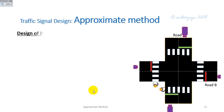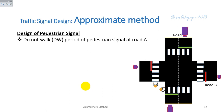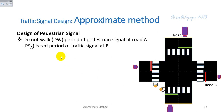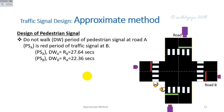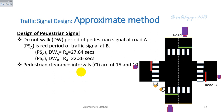For the design of the pedestrian signal: the 'Do Not Walk' period for Road A is equal to the red timing of the traffic signal at Road B. The 'Do Not Walk' period for Road A equals the green time for Road A plus the red timing for Road B — therefore the 'Do Not Walk' period for Road A equals RB, which is 27.6 seconds. Similarly, the 'Do Not Walk' period for Road B equals the red time for Road A, which is 22.36 seconds.